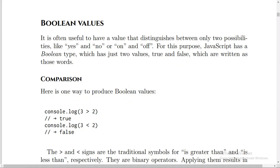Boolean values. It's often useful to have a value that distinguishes between only two possibilities, like yes and no, or on and off. For this purpose, JavaScript has a Boolean type, which has just two values, true and false, which are written as those words.